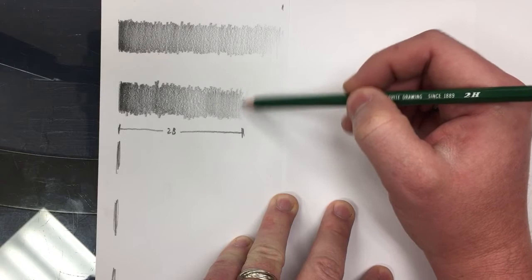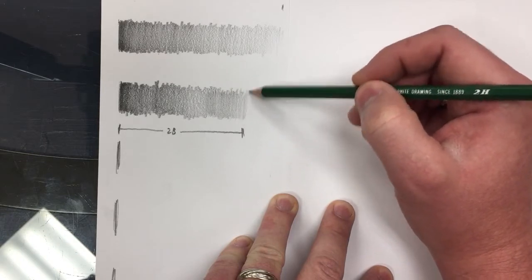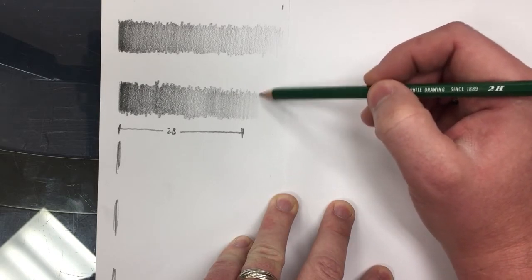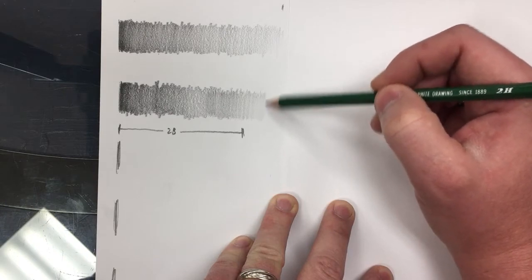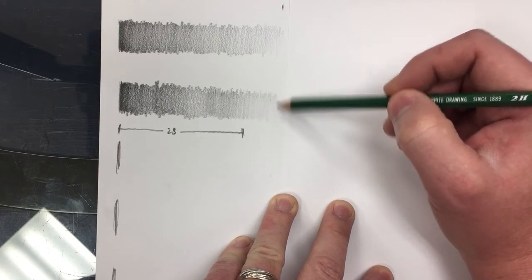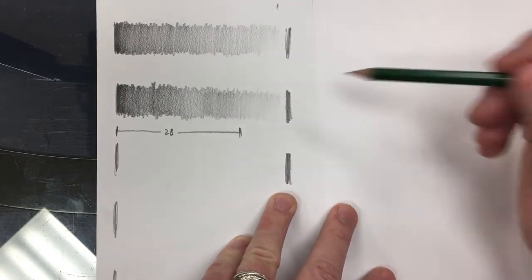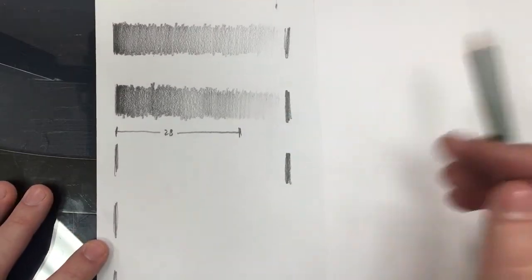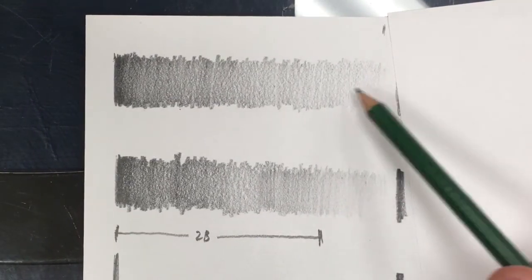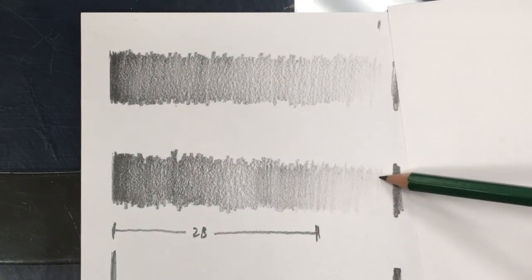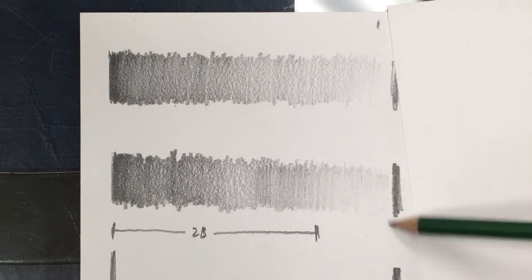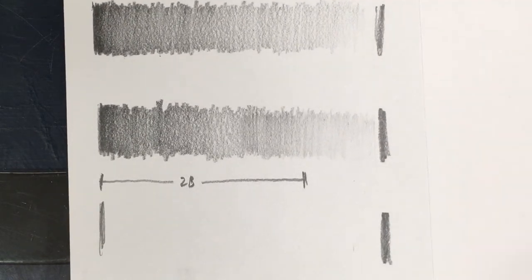You see how I'm gripping the pencil higher on the pencil, very lightly. Down here it's as if I'm letting gravity push down on the pencil and all I'm doing is moving it across the paper, blending that to white. You can see how much smoother this is than the one above.